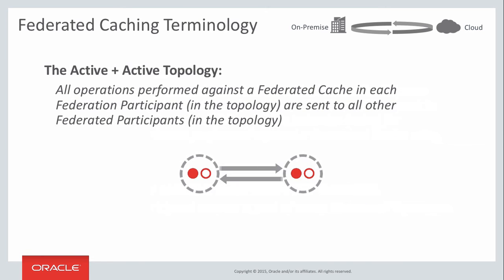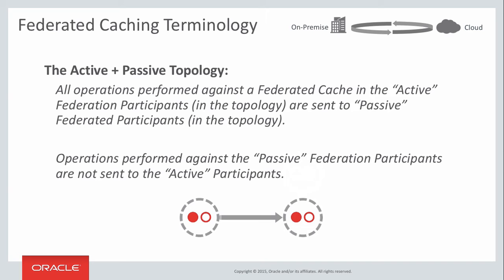The classic topology is active-active — sometimes called multi-master. All operations performed against a federated cache in one federated participant are sent to all other federated participants and vice versa. This is exactly what happened in our demo: cluster A and cluster B in active-active, with updates in A sent to B and updates in B sent to A. The active-passive topology means all operations performed against the active participants are sent to all passive participants. Coherence allows multiple actives and multiple passives — all actives replicate between each other and down to the passives — but any operations performed against a passive are not sent back to the actives.